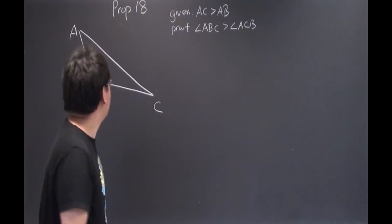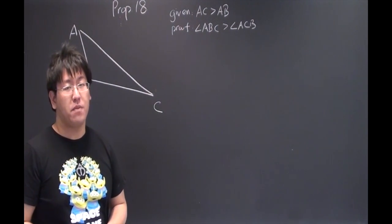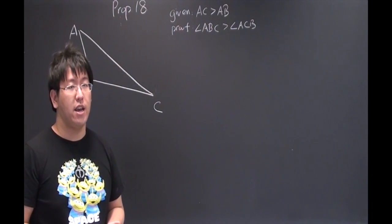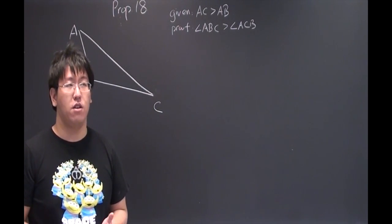Okay, let's start. At first, since we have AC is greater than AB, I can cut a line AD which is equal to AB by using Prop 13.